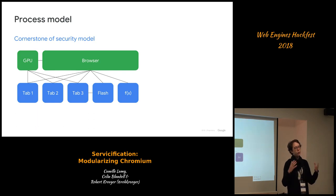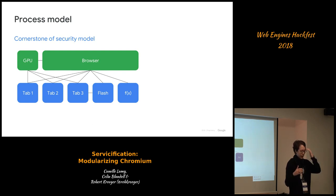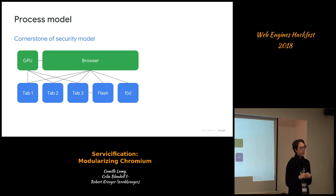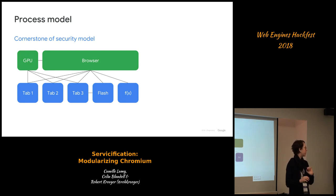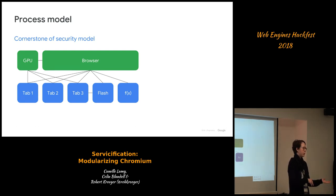In terms of isolation that we have, the process model is the cornerstone — it's really the cornerstone of the security model. We put things into different processes, many of which are sandboxed to isolate them. We regulate the access they can have between each other via a core browser process, which talks through an IPC system to the rest of the tabs where the untrusted web contents run. We also have a GPU process for displaying stuff on the screen, because we don't want tabs with access to untrusted web contents to also have access to the GPU.